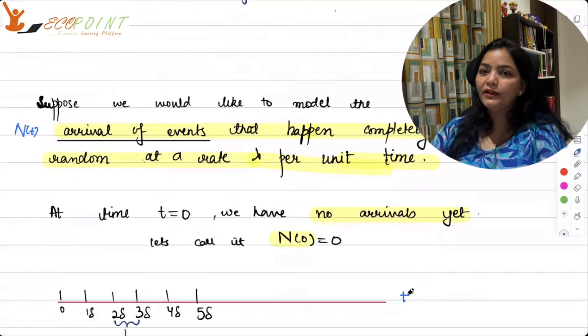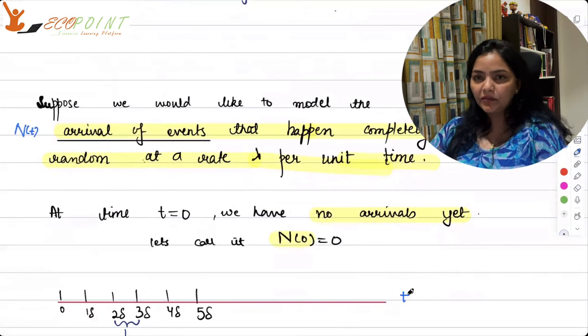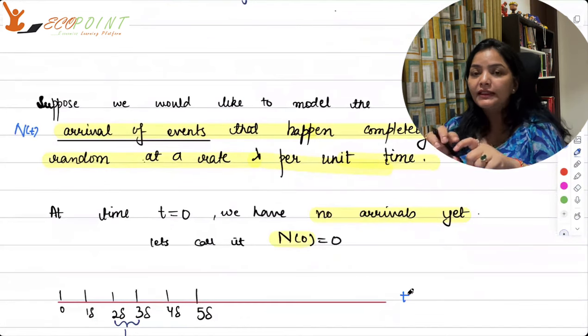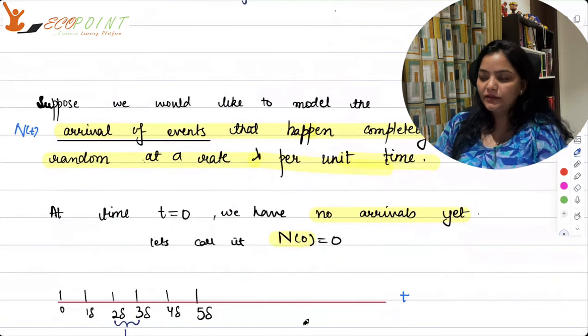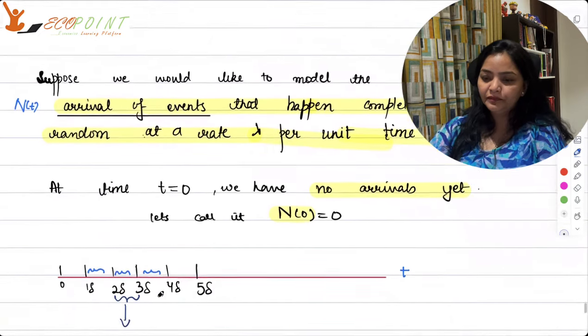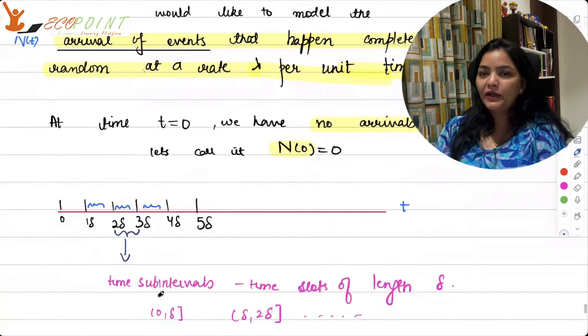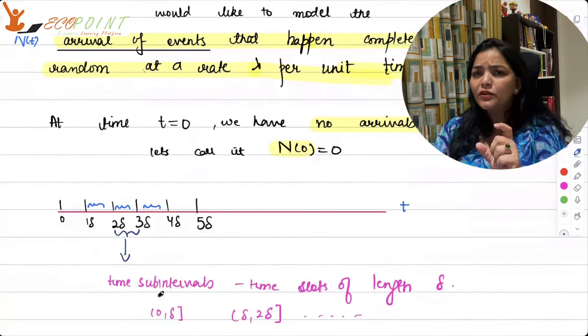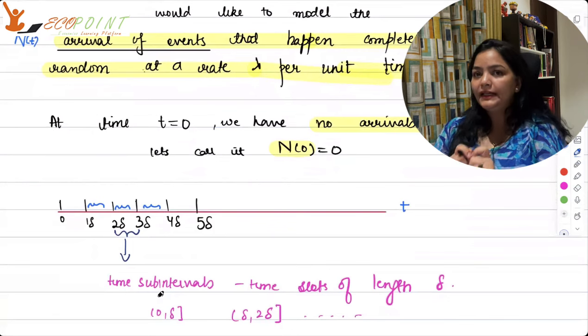So what we can do is, in order to understand poison process here, I just want to break this timeline in delta intervals or intervals of length delta. So zero to one delta, one delta to two delta, two delta to three delta, three to four, so on and so forth. These are all time sub intervals of length delta.